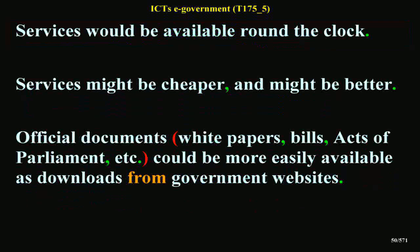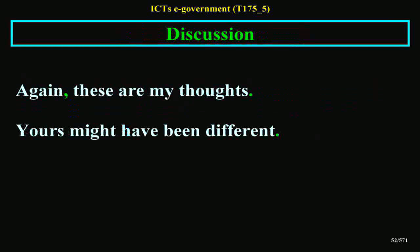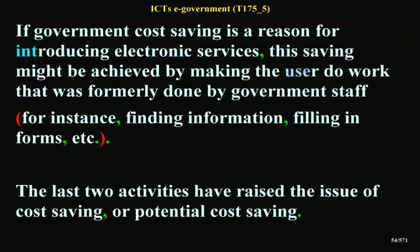Official documents, white papers, bills, acts of parliament, etc., could be more easily available as downloads from government websites. Activity 3 Exploratory: Can you think of any disadvantages that might follow from making these services available electronically? Discussion: people without access to online facilities might find that conventional services are less well supported than before, for instance by being poorly staffed or more awkward to use. If government cost saving is a reason for introducing electronic services, this saving might be achieved by making the user do work that was formally done by government staff — for instance, finding information, filling in forms, etc.